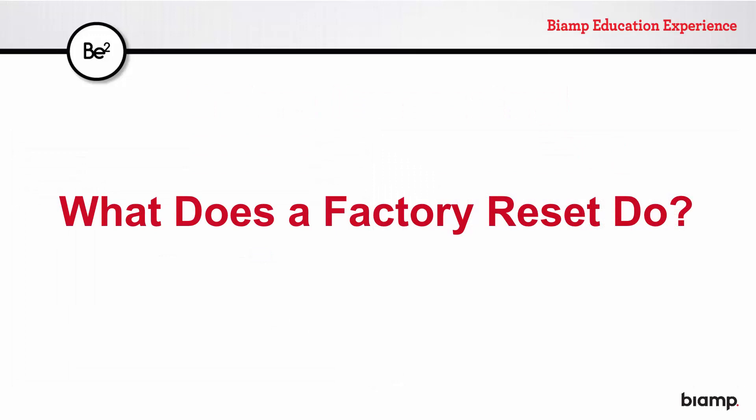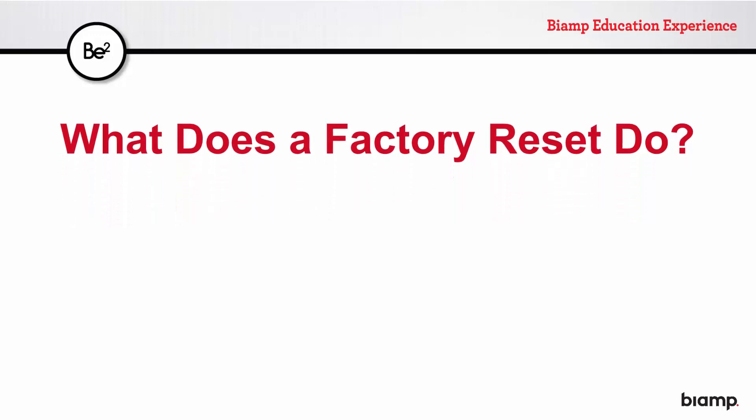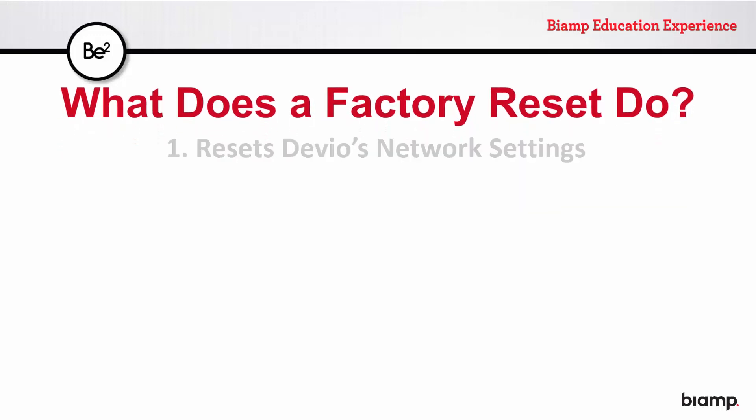There are many parameters that are affected. Here is a list of those that you would most likely be concerned with. The CR1 will revert back to DHCP and so could potentially fall off the network. This will not affect your ability to use Devio, as a network connection is not required, but it would be problematic for your system administrator if they are remotely maintaining Devio.